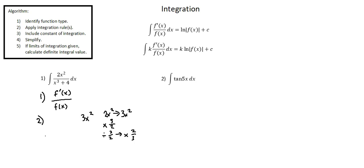So what I'm going to do is manipulate my expression. I'm going to multiply everything by 2 over 3, and 2 over 3 is the k in our integration rule. I'll take k, the constant, outside of the integration — as a constant value, not a variable value — placing it to the left of the integration symbol. So we have 2 over 3 times the integral of 3 over 2 times 2x squared over x to the power of 3 plus 4 with respect to x.